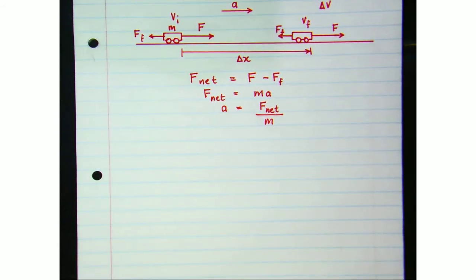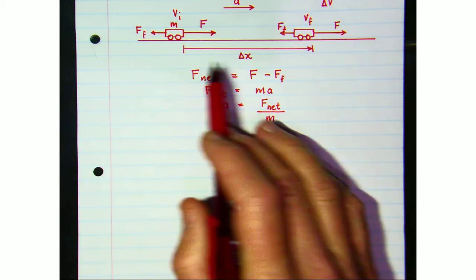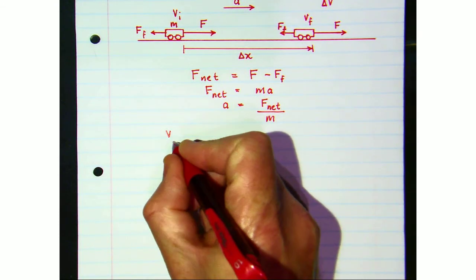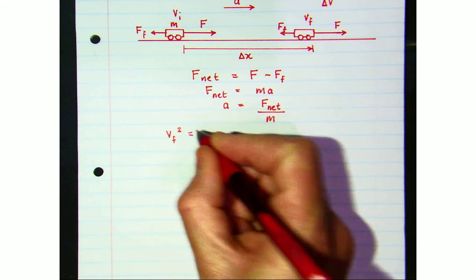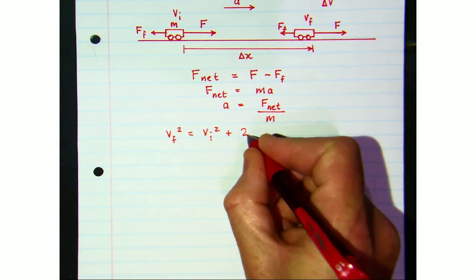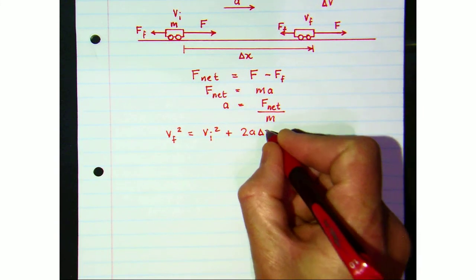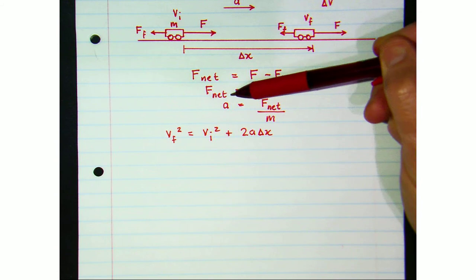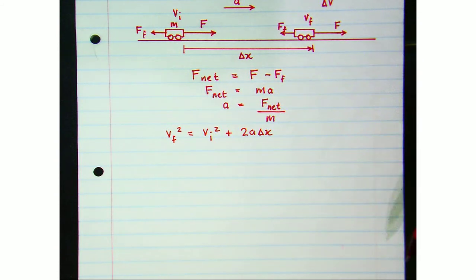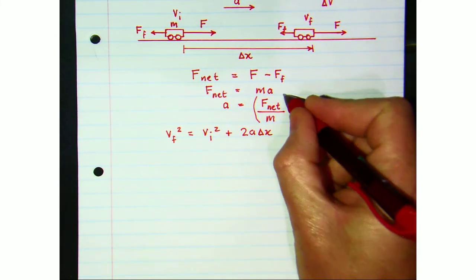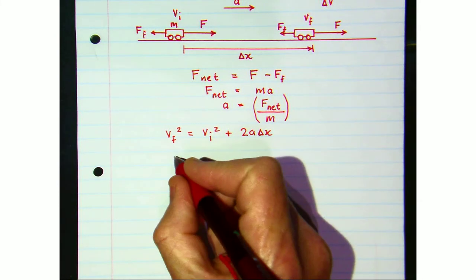Because this is straight-line motion with a constant net force and constant acceleration, we can use an equation of motion: v_f² = v_i² + 2a·Δx. We then substitute the expression for acceleration — net force divided by mass — into that equation.